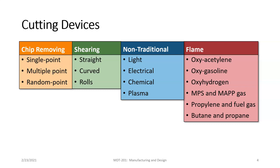And then flame — usually flame is going to fall into the category of welding type operations. They're actually the opposite of welding. Welding is when you're joining two things together, but we recognize flame cutting as part of the world of welding. So we have oxyacetylene, oxygasoline, oxyhydrogen, NPS, and map gas, propylene, fuel gas, butane, and propane.